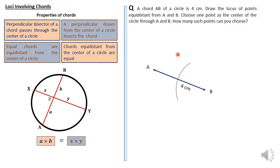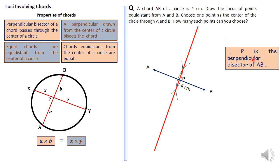To construct this, stand at B, open your compass to a radius bigger than half the distance AB, and make an arc. Using the same radius, stand at A and make the other arc. Join where the two arcs intersect — you get the red line P. So P is the locus of points equidistant from A and B; it is the perpendicular bisector of AB. Any point along this line is equidistant from both A and B — if P is at any position on the line, AP and PB are equal.